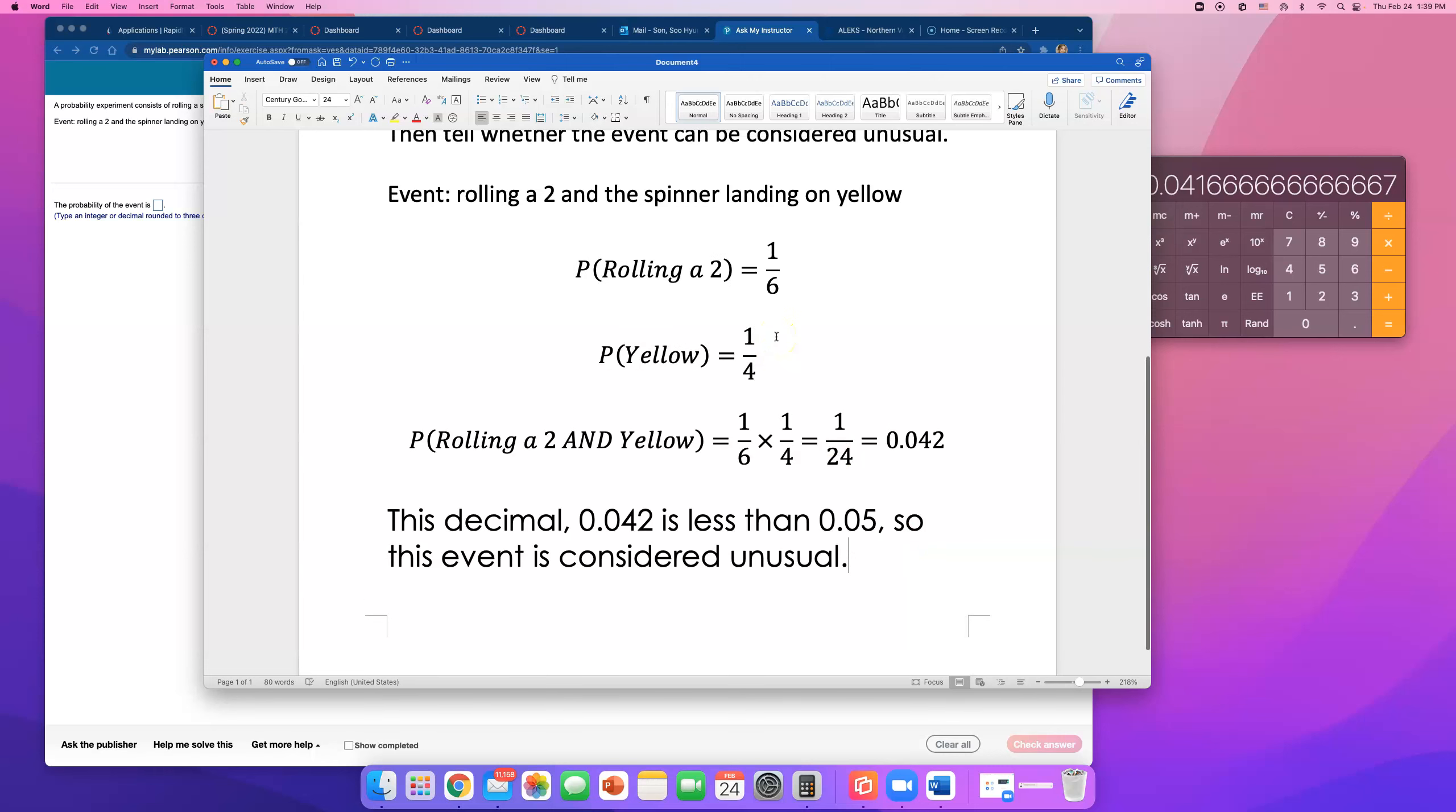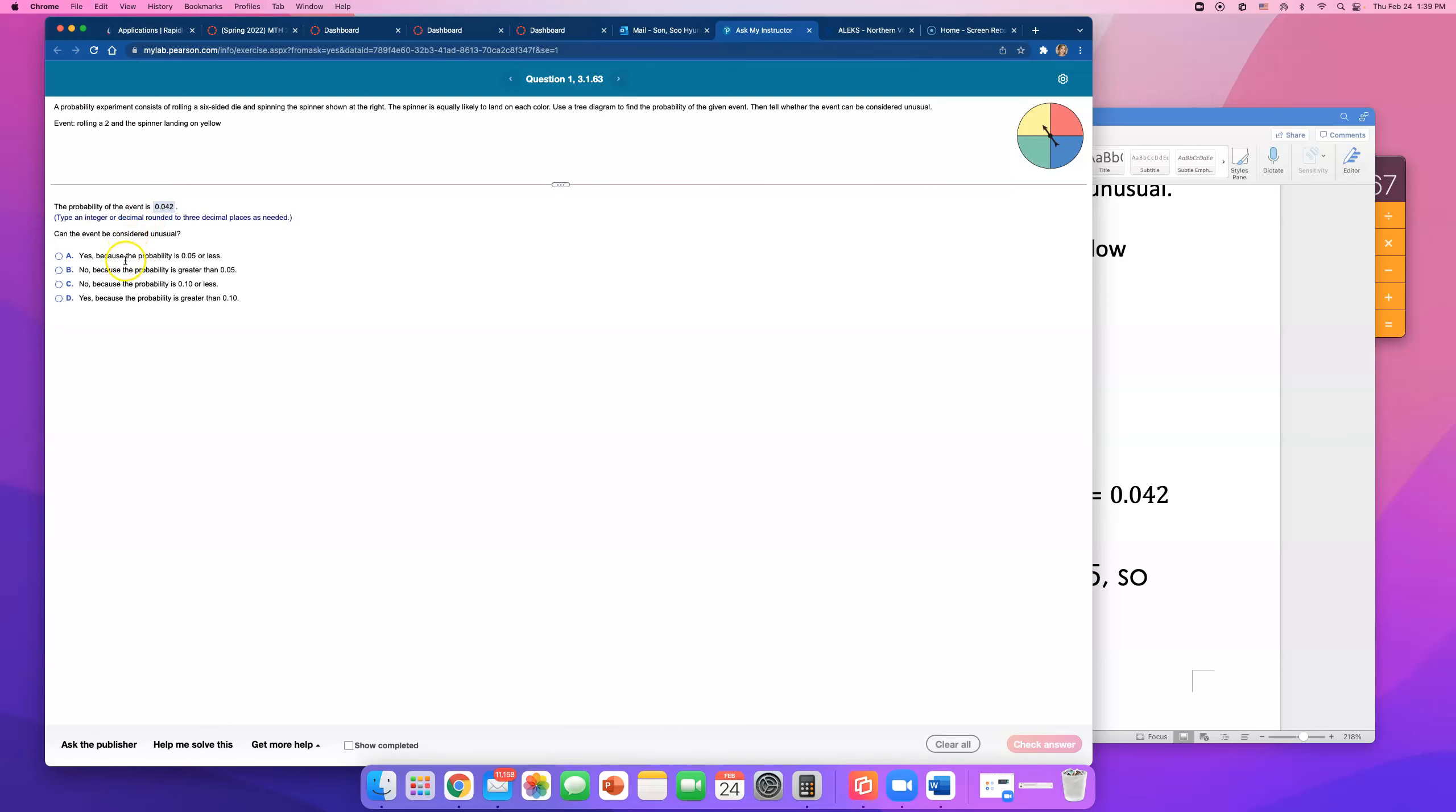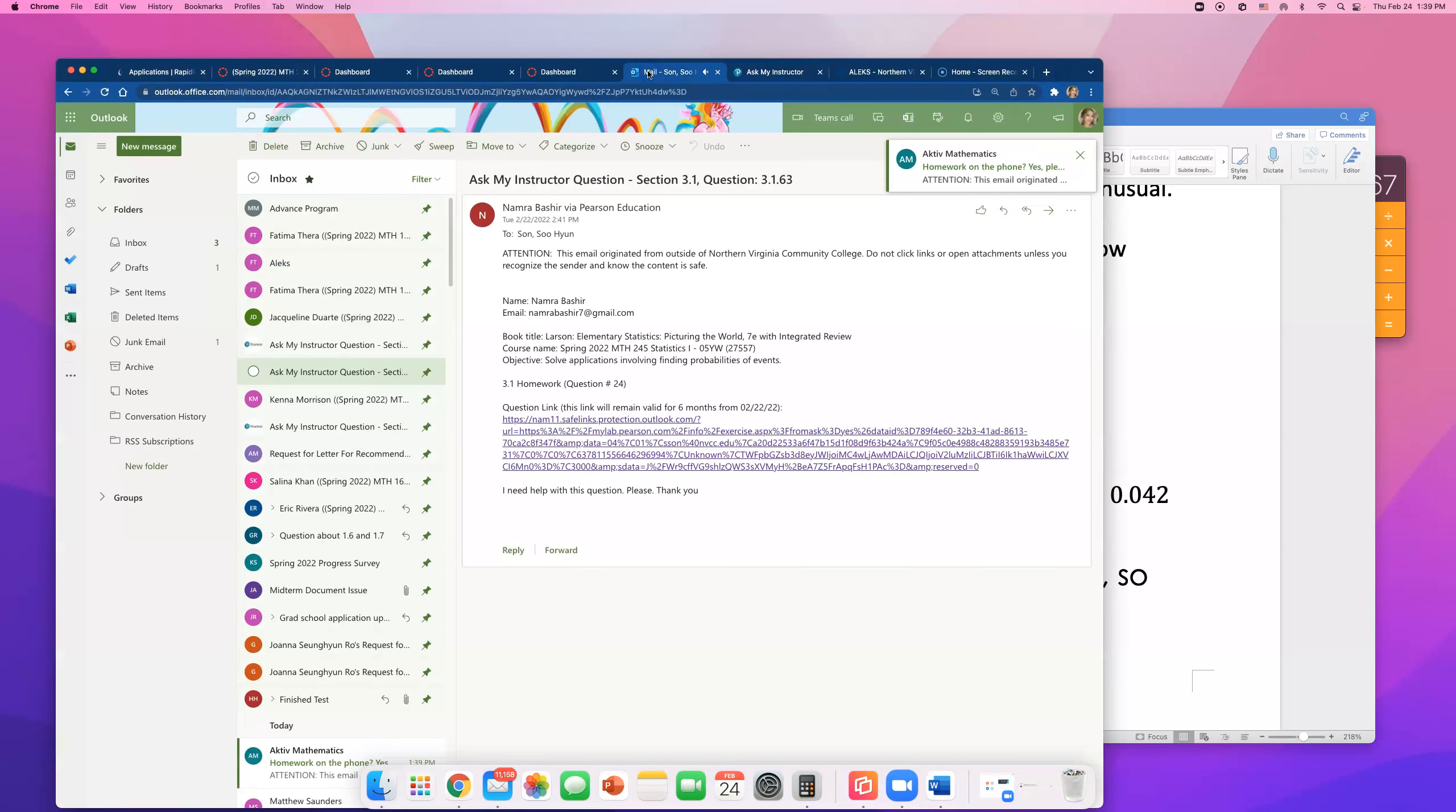So let's type those in. The probability of this event is 0.042, and this is unusual, yes, because the probability is 0.05 or less. And that's how you can do this question, and this one was, let me see which homework it was, question number 24 on 3.1 homework.